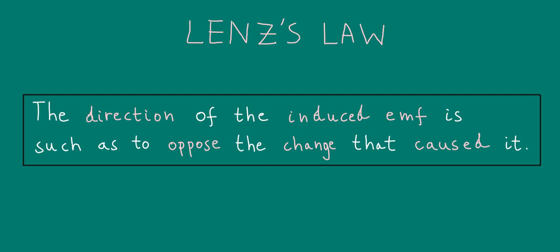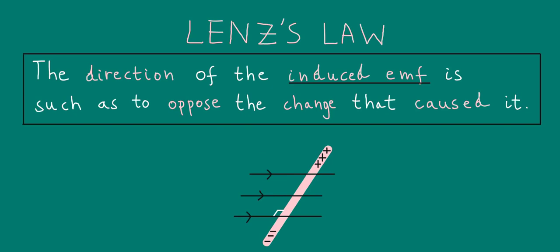What does Lenz's Law actually mean? Remember, for an EMF to be induced across the ends of the wire, the wire needs to be moved up, cutting magnetic field lines in the process. This is the change that causes the induced EMF. But what's meant by the direction of the induced EMF? We can think of the direction of the induced EMF as being the direction in which the induced current flows in the wire, which is from negative to positive.